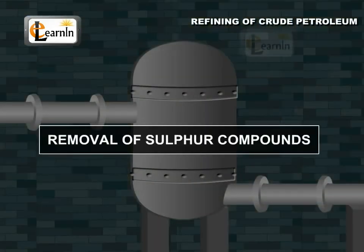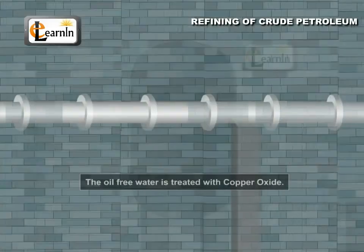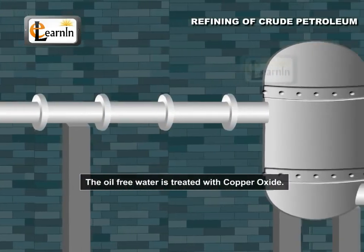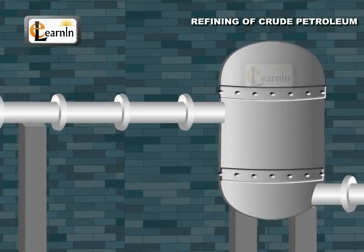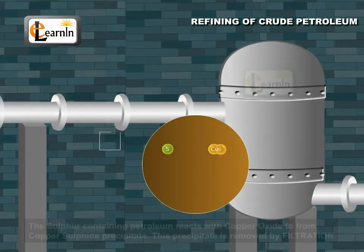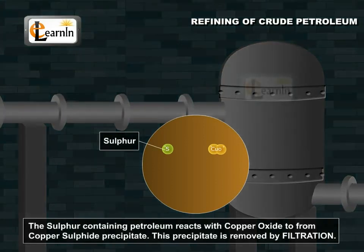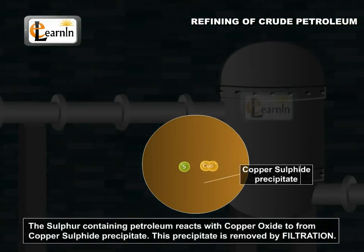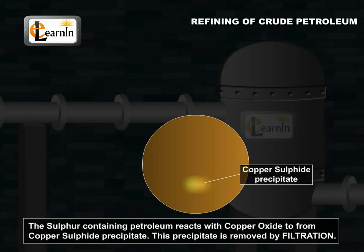Step 2: Removal of sulfur compounds. The oil, free from water, is treated with copper oxide. The sulfur-containing petroleum reacts with copper oxide to form a copper sulfide precipitate. This precipitate is removed by filtration.